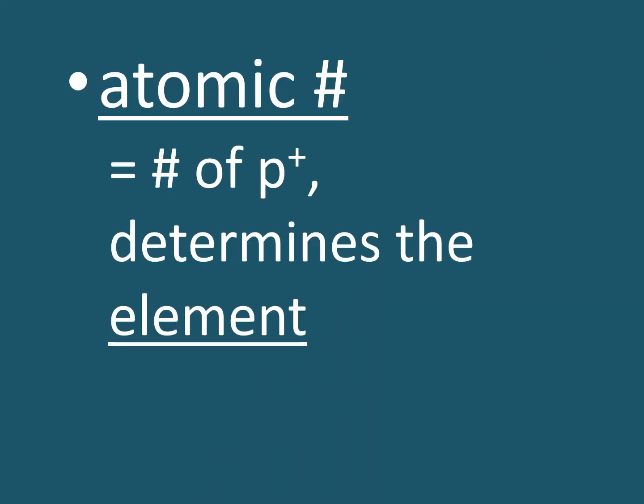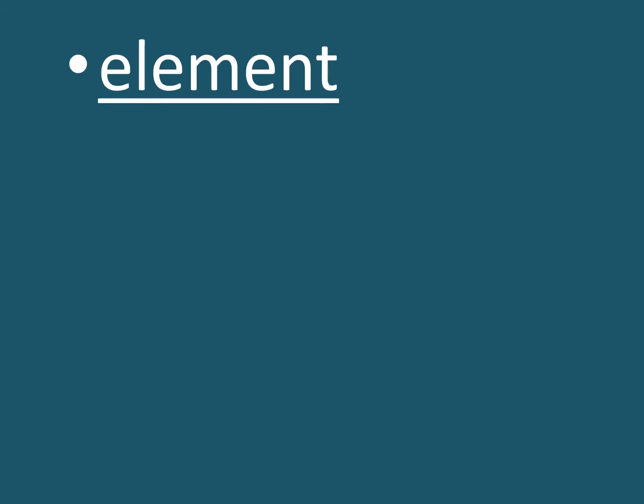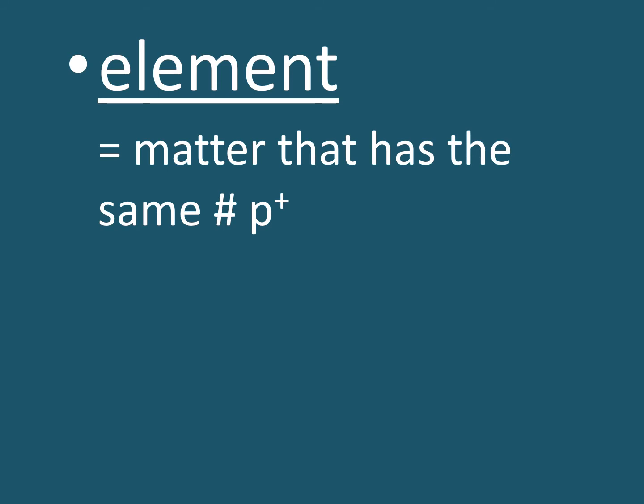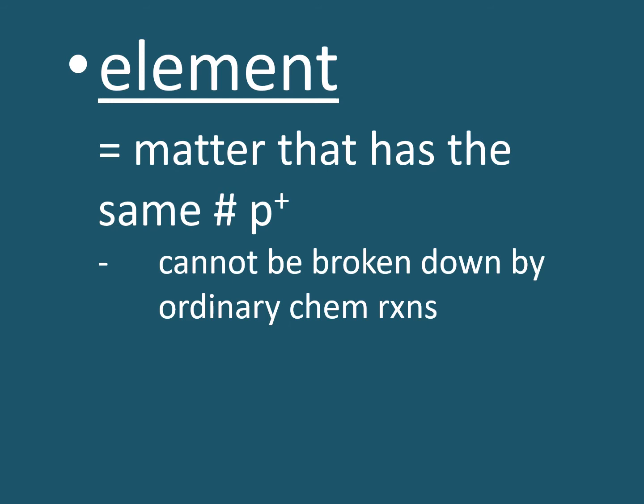Different atoms have different atomic numbers. The atomic number of an atom is equal to the number of protons that is found within that atom. The atomic number also determines the element that the atom belongs to. What is an element? An element is matter that has the same number of protons. Elements cannot be broken down by ordinary chemical means. And each unique element has its own distinct characteristics.